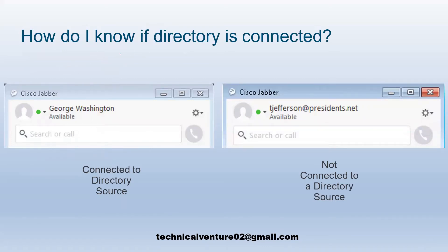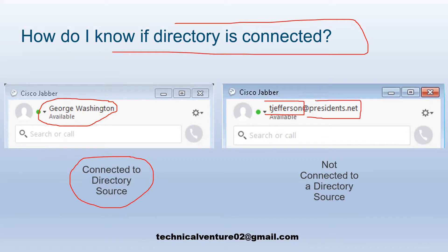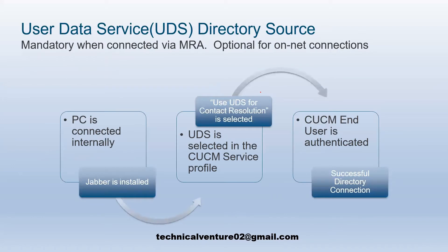How do you know if the directory is connected or not? If Jabber is showing the full name — first name and last name — it means it is connected to the directory source. If it is only showing the user ID with the at-rate domain name, that means it is not connected to your directory source. UDS directory resource is mandatory when connected via MRA.